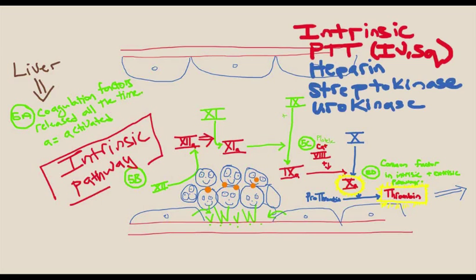When we talk about the intrinsic pathway, the pharmacological drugs that can affect it are those taken IV or sub-Q. As Joe says, intrinsic IV sub-Q, like heparin, streptokinase, or urokinase.